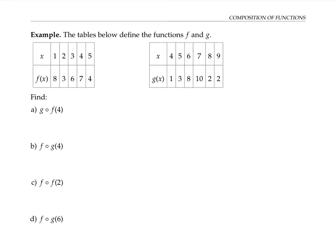Let's work out some examples where our functions are defined by tables of values. If we want to find g composed with f of four, by definition, this means g of f of four. To evaluate this expression, we always work from the inside out. We start with the x value of four and find f of four — using the table of values for f of x, when x equals four, f of x is seven. So we replace f of four with seven. Now we evaluate g of seven: from the table for g, the x value of seven corresponds to g of x equals ten. So g of seven is ten, and g composed with f of four equals ten.